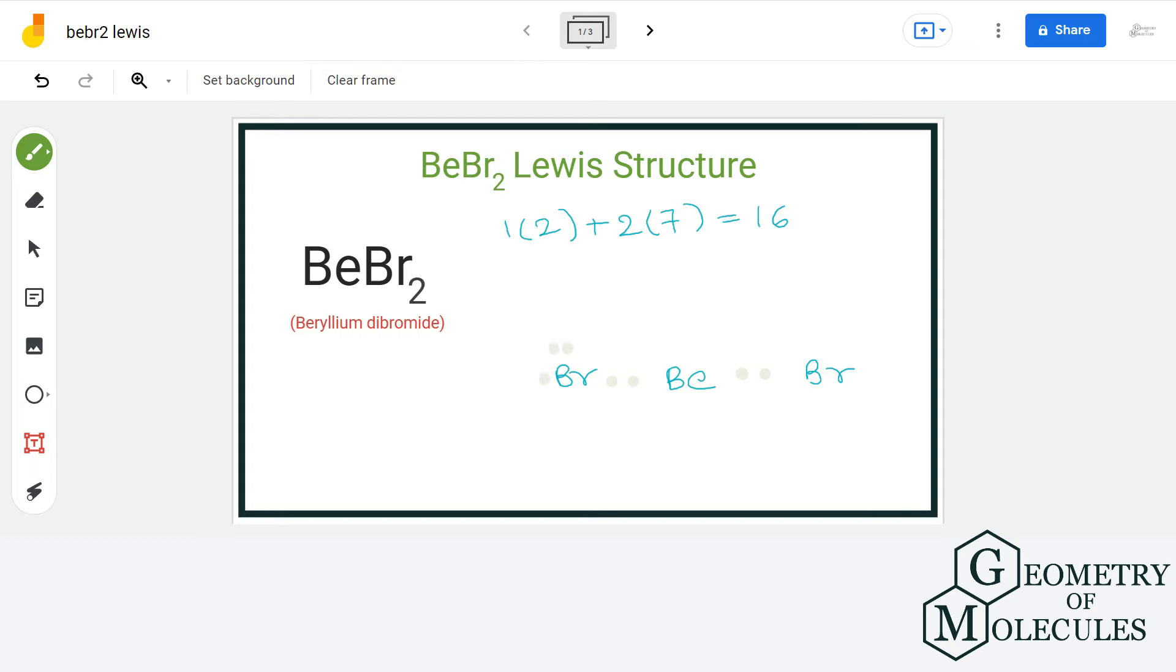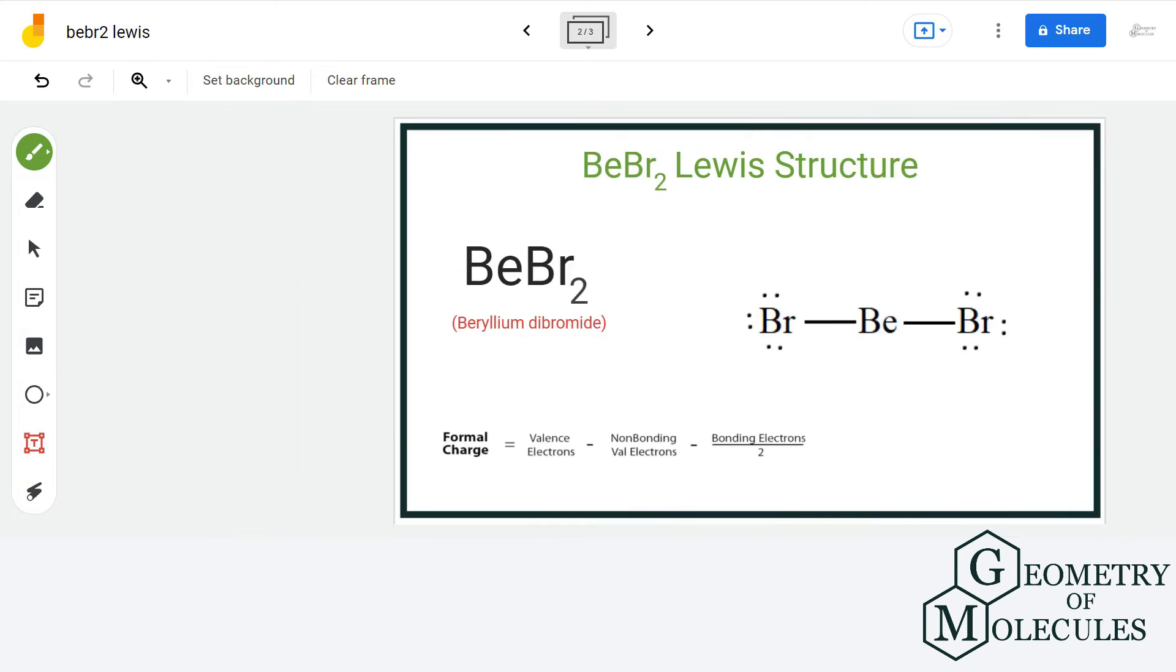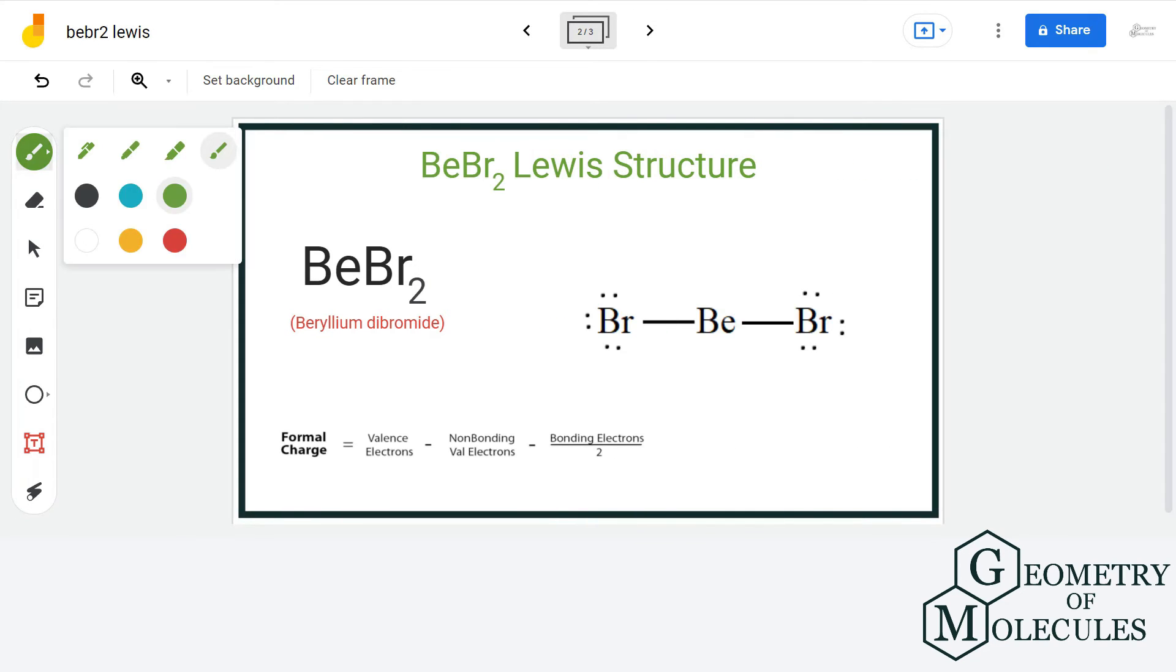We are going to place six valence electrons around each bromine atom for completion of octet. Doing that, we have used up all our valence electrons. Now, all the atoms has complete octet in this Lewis structure.